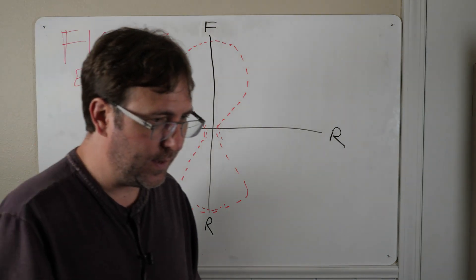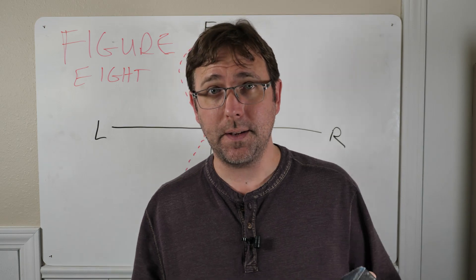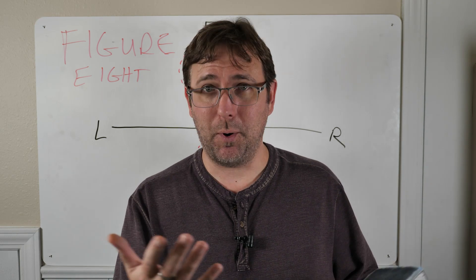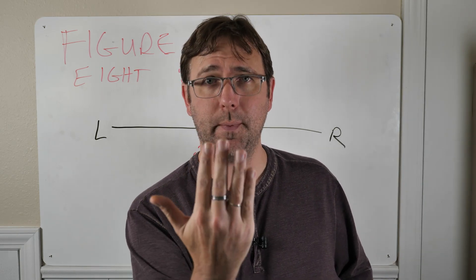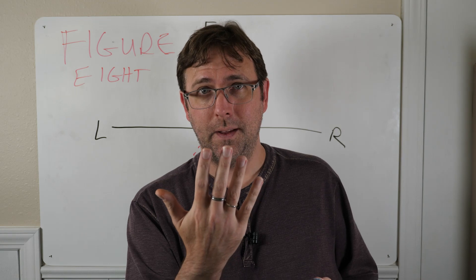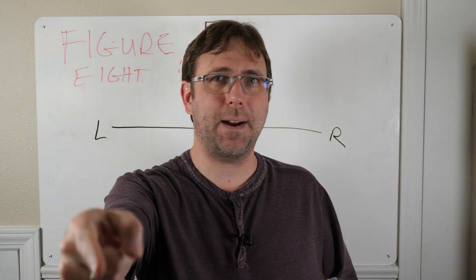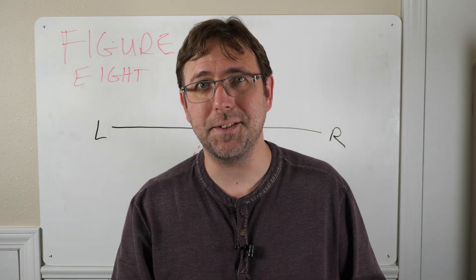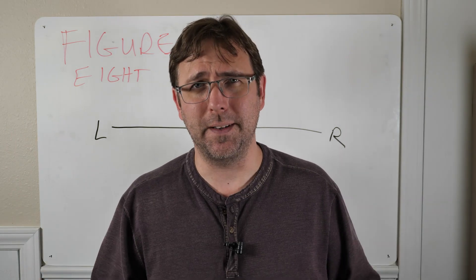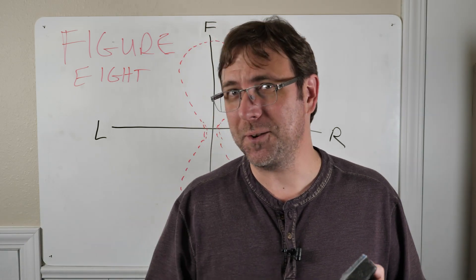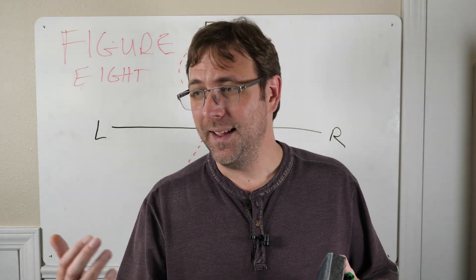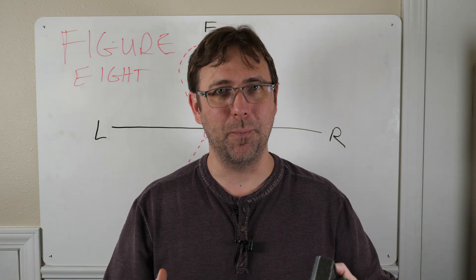So a figure eight is like ribbon microphones, which just by design are figure eight. They pick up from the front and the rear. That can be a problem in a small room because you get it pointed at whatever you want to mic, like a voice, but it's also picking up from the rear. So it's picking up reflections off the back of the room. You definitely want to be conscious about how reverberant your room is. If it's a great sounding room, maybe that's what you want. But if it's a small crappy sounding room like most of us are in, it's probably not what you want. So you probably want to think about some acoustic treatment, something to absorb some of those reflections to tame the room.